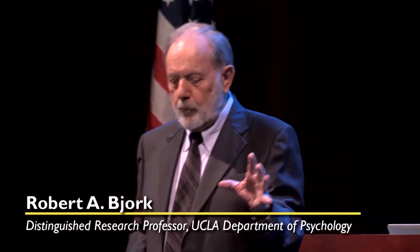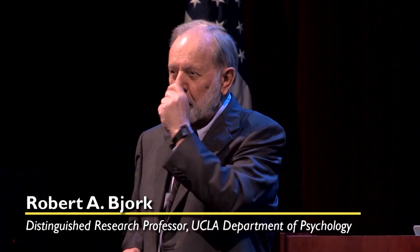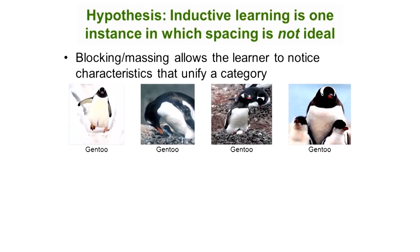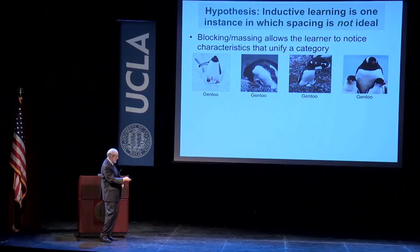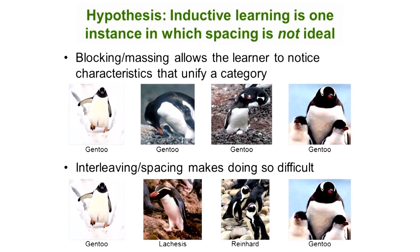A postdoc who is now teaching at Williams College, Nate Cornell, and I decided this has to be one case where blocking — massing — is advantageous. The argument was that when they're together like this, you can see the features that sort of define the category, maybe for example this little white band up here. Whereas interleaving or spacing makes that very difficult to do.